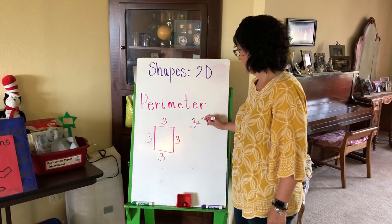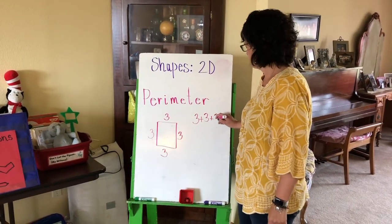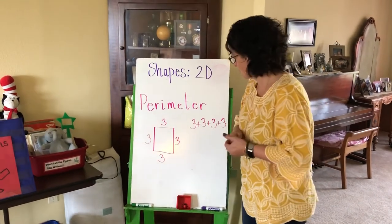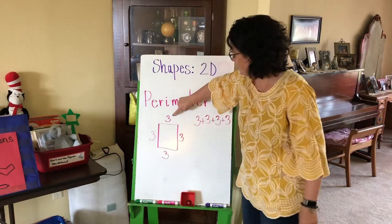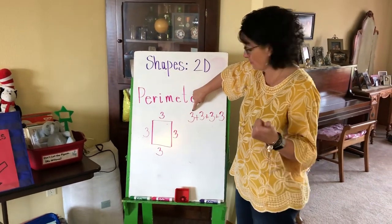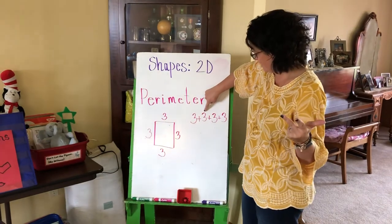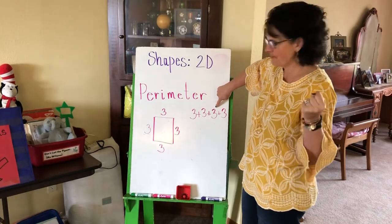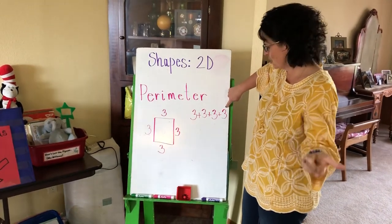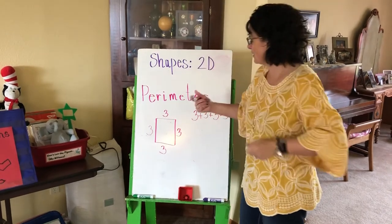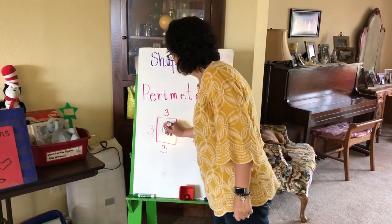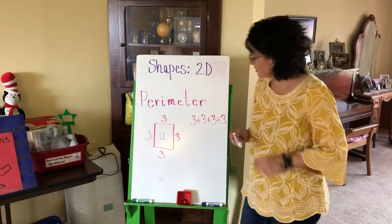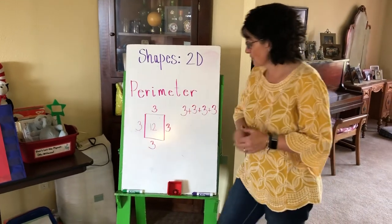Now I'm going to add up all four sides to get my perimeter: three plus three plus three plus three. That's a lot of numbers, so I can use my fingers to help. Three, and then count on three more: four, five, six. Then three more: seven, eight, nine. Then three more: ten, eleven, twelve. The perimeter of the ladybug's house is twelve inches!